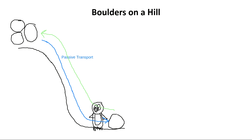If our little penguin friend works really hard and uses its own energy to physically push that boulder up the hill, that's an example of active transport. For those who've looked at the guided lesson, there are two kinds: primary active transport and secondary active transport. In primary active transport, we're using the energy of ATP.